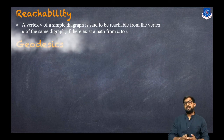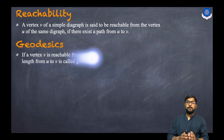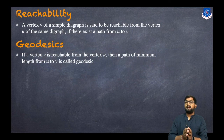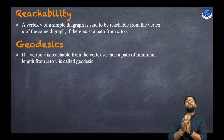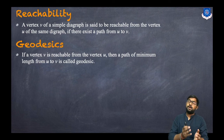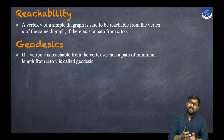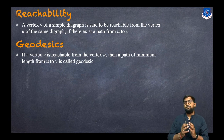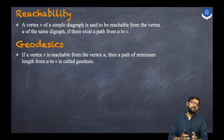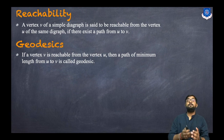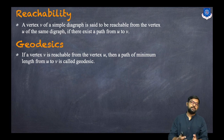Now let us understand what is a geodesic. If a vertex V is reachable from vertex U, that means there is a path between U and V. A path of minimum length from U to V is called a geodesic. So there exists a path and it is of minimum length — we can say that it is a geodesic.